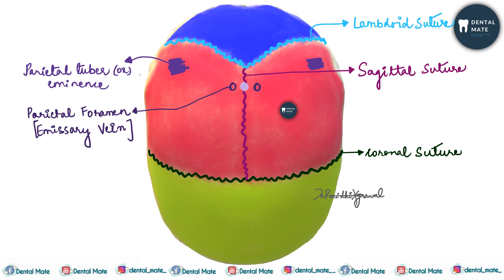A point on the sagittal suture just medial to the parietal foramen, considered as a representative of the third eye, is called obelion. The highest point on the sagittal suture is known as the vertex.